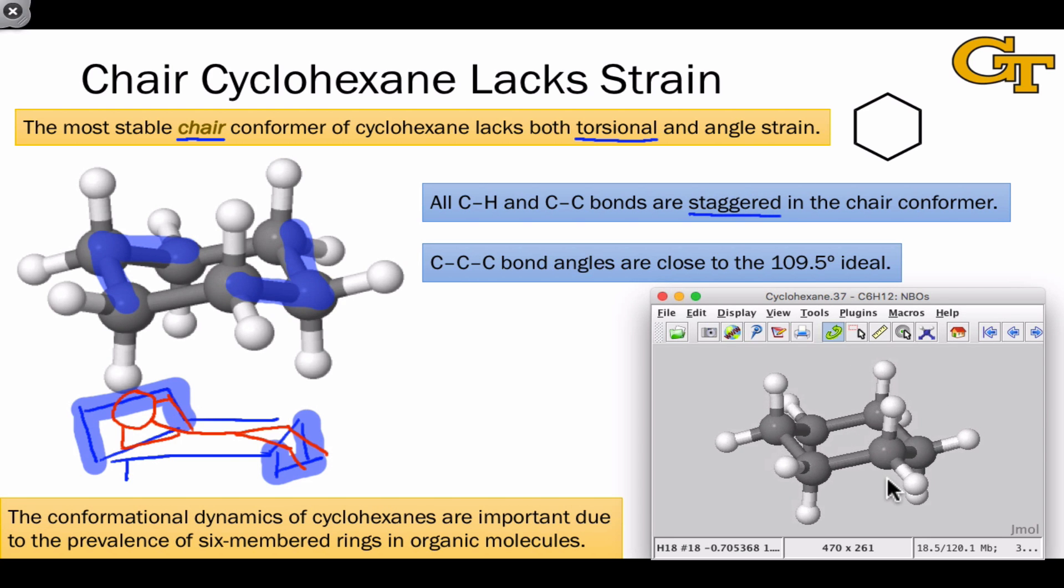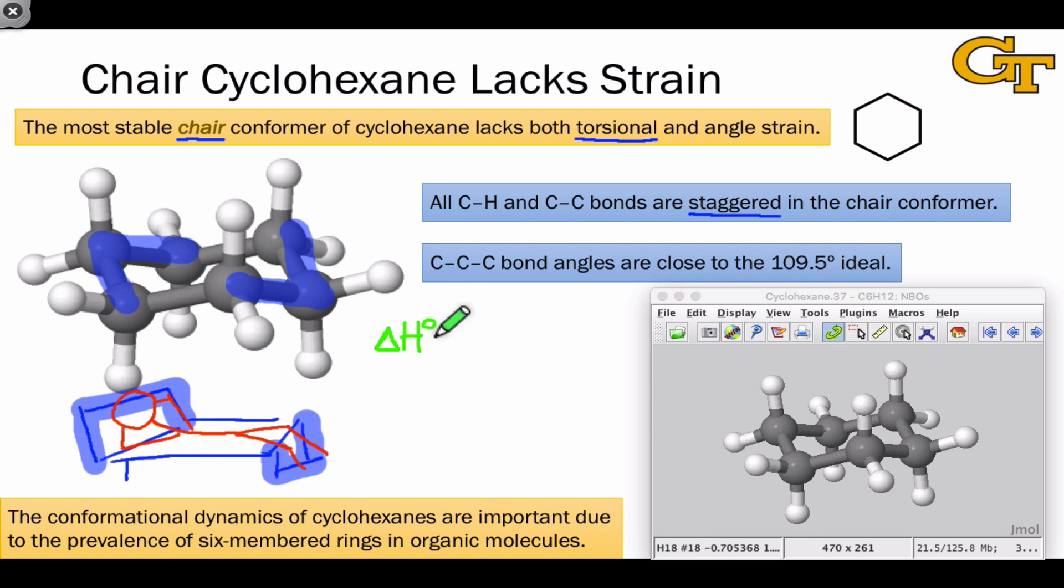Additionally, the bond angles within chair cyclohexane are very close to the 109.5-degree ideal for sp3 hybridized carbons. And so the chair conformer of cyclohexane is essentially strain-free, with angle strain and torsional strain effectively nil. Remember, this was the special point on that graph of enthalpies of formation of linear and cyclic alkanes, where we observed that the heat of formation for linear acyclic hexane was equal to the heat of formation for the cyclic-related compound, cyclohexane. This is the empirical evidence that cyclohexane is essentially strain-free.